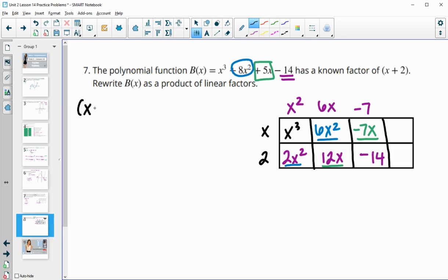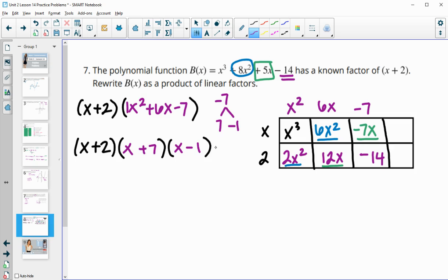We've divided in the (x+2) factor and gotten down to x squared plus 6x minus 7. We need to factor that. Since the first term is x squared, that's x times x. We're looking for factors of negative 7 that add to 6, so one positive and one negative. We want a difference of 6 that's positive 6, so negative 1 and plus 7. That multiplies to negative 7 and adds to 6x. So our product of linear factors is (x+2)(x+7)(x-1).